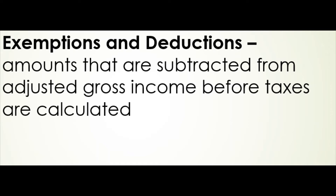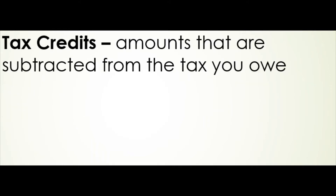We're going to talk in the next lesson about how to calculate that tax. Once you've calculated the tax that you owe, you get to subtract tax credits. Tax credits are amounts that are subtracted from the tax you owe — for example, the earned income credit or the child tax credit. These amounts get to be subtracted directly from the tax after we've calculated how much tax we owe.